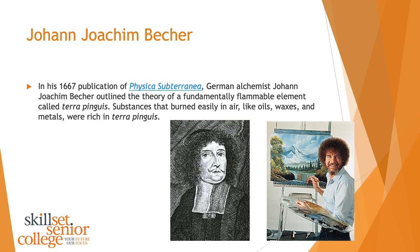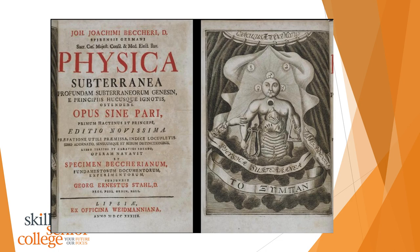Becker basically came up with this idea that phlogiston was the cause of all flammable materials. If you look back at books written at the time, you can see there are a lot of symbols on the front of the textbook — it looks very different to what a chemistry textbook looks like now. It was still steeped in the mysticism of alchemy, but it was important nonetheless in trying to figure out: why do things burn, and why do some things burn and others don't?